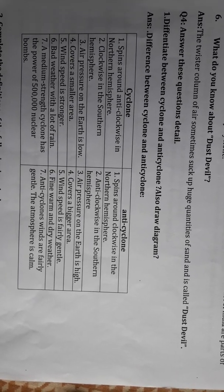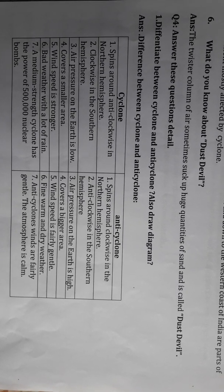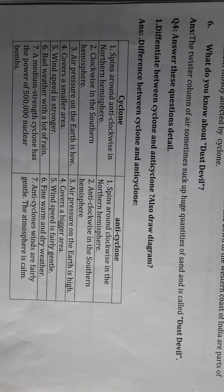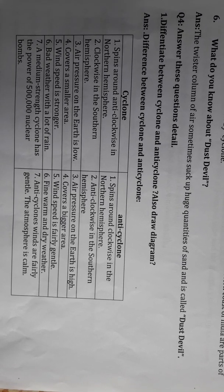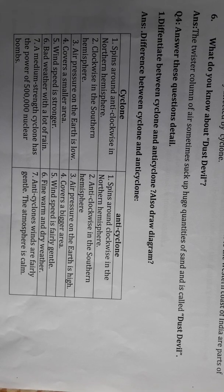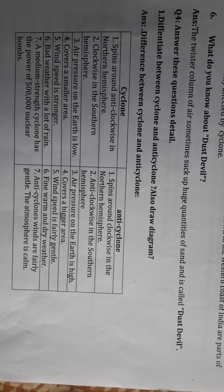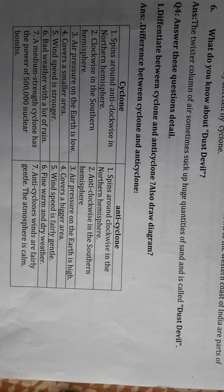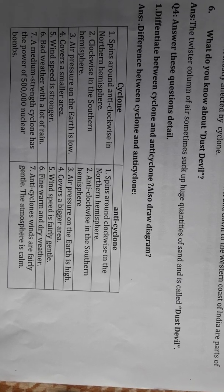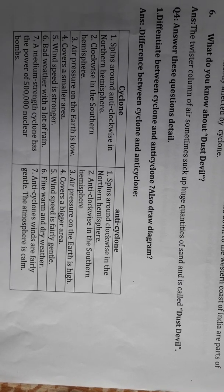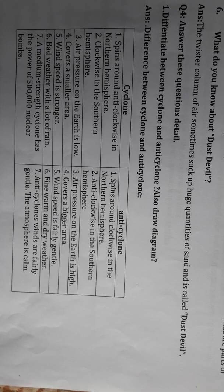The detail question compares cyclone and anti-cyclone. In a cyclone, wind moves anti-clockwise in the northern hemisphere and clockwise in the southern hemisphere. Air pressure on earth is low and it covers a smaller area. Wind speed is very high.